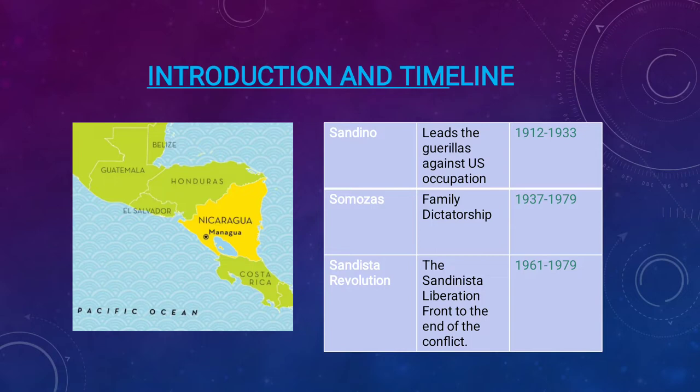To the left, I first want to show you an image of the country of Nicaragua highlighted in yellow, with the capital Managua marked with a little star. To the south is Costa Rica, to the north is Honduras, then El Salvador, Guatemala, and Belize. To the left is labeled the Pacific Ocean and to the right is the Caribbean Sea. It's important to note that Nicaragua is the largest country in Central America.